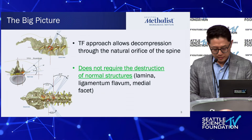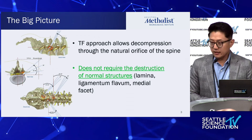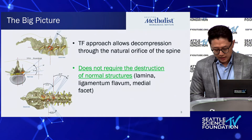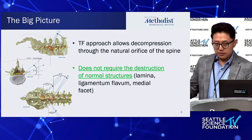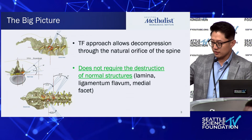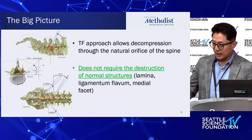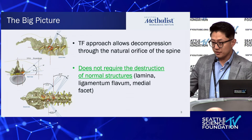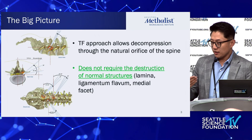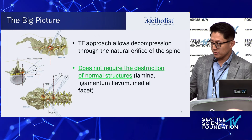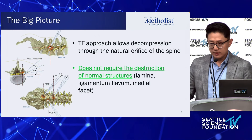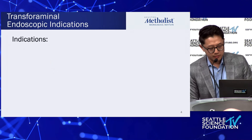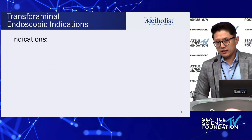This does not require the destruction of normal structural elements such as the lamina, ligamentum flavum, or medial facet just to get to ventral pathology. We're so used to the norm being: take out normal lamina, normal ligamentum flavum, maybe some medial facet just to get to the problem — whereas with transforaminal surgery, we get to the problem without taking any of that. That's where the power comes from.